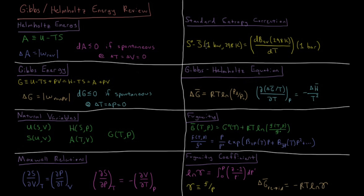We can measure the change in entropy for a non-ideally behaving gas using a fairly simple correction obtained from Maxwell relations. The standard entropy minus the molar entropy at 1 bar and 298 K gives the deviation due to non-ideality, which to a first approximation comes from the first derivative of the second virial coefficient at 298 K with respect to temperature, multiplied by one bar of pressure.